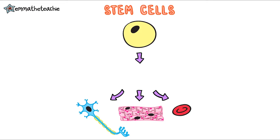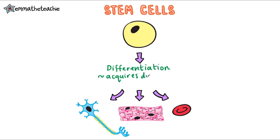We're going to start with recapping what differentiation is — we looked at this in the specialized cells video. When a cell differentiates it means it changes by acquiring different subcellular structures like mitochondria and ribosomes. By doing this it becomes a specialized cell.